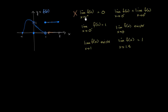This would be true if instead of approaching from the positive direction, we said from the negative direction. From the negative direction, the value of the function really does look like it is approaching 0. As x approaches 1 from values less than 1, f of x gets closer and closer to 0. So it would only be true approaching from the negative direction.